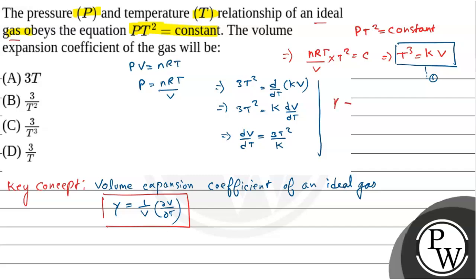Volume expansion coefficient gamma is 1 by V into dV by dT. Now dV by dT is what? 3T² by K. V into K from equation 1, we know that this is T³.